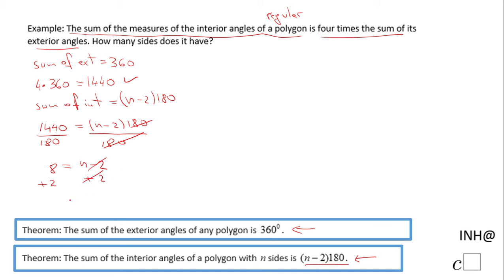We end up with n equals 10. That means the polygon for which the sum of the measure of the interior angles is four times the sum of its exterior angles is a decagon, a polygon of 10 sides.